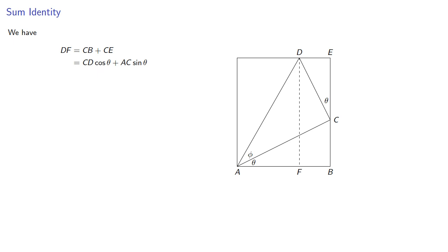Now CD is in this right triangle, and so we know the sine of phi, well that's CD over AD, and AC is in this right triangle, and so that's the cosine of phi is AC over AD.